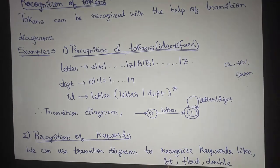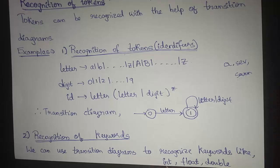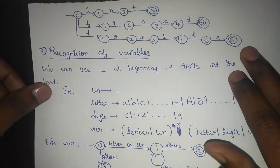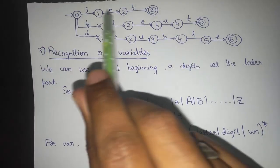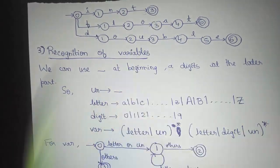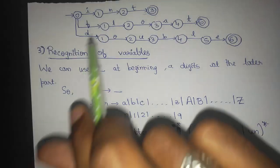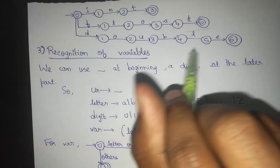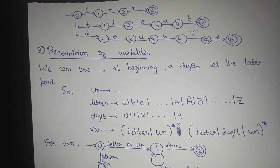Next we discuss recognition of keywords. We can use transition diagrams to recognize keywords like int, float, double, while, for loops, or if and else. We can recognize these tokens using state transition diagrams. Here we can observe that int is being recognized and transitions to the final state, then for float we go to the final state, and for double we go to the final state. The transition happens from state to state using letters or other characters.